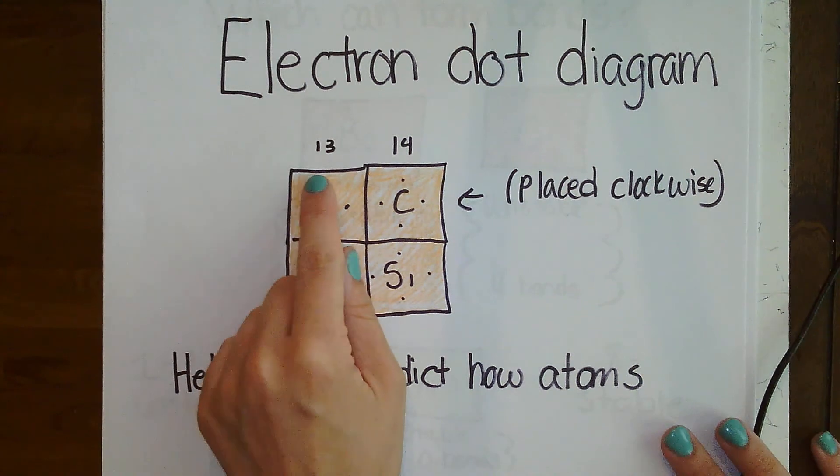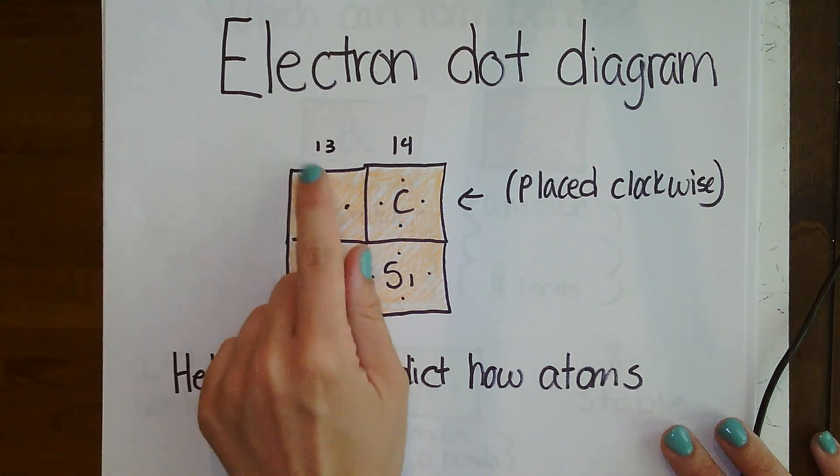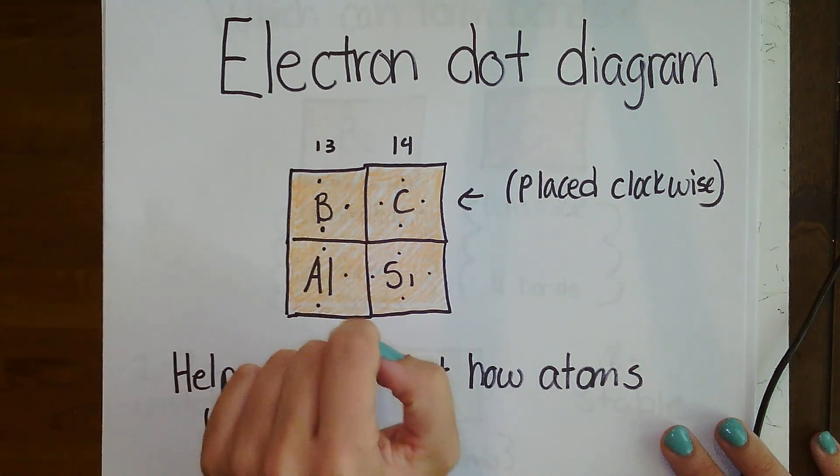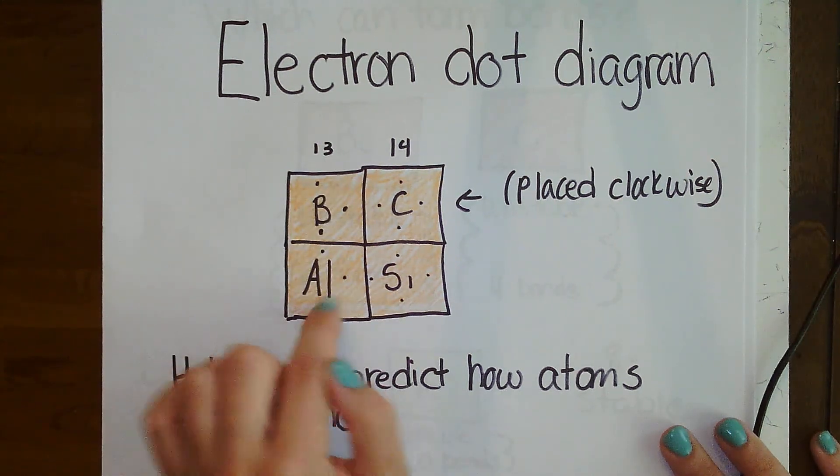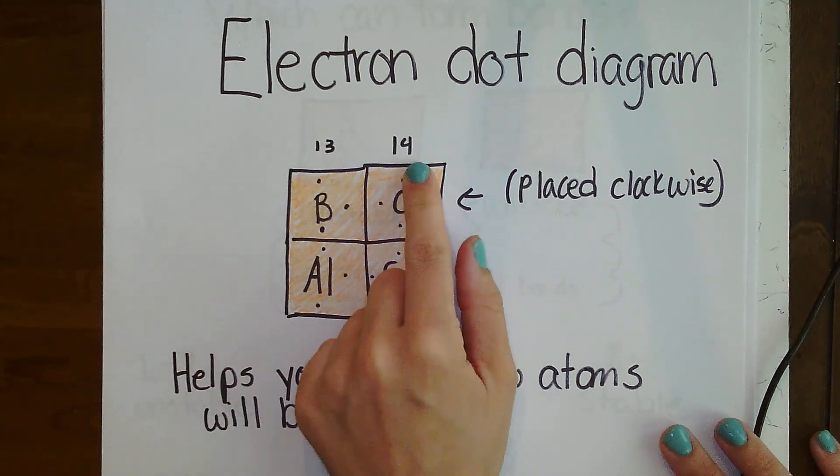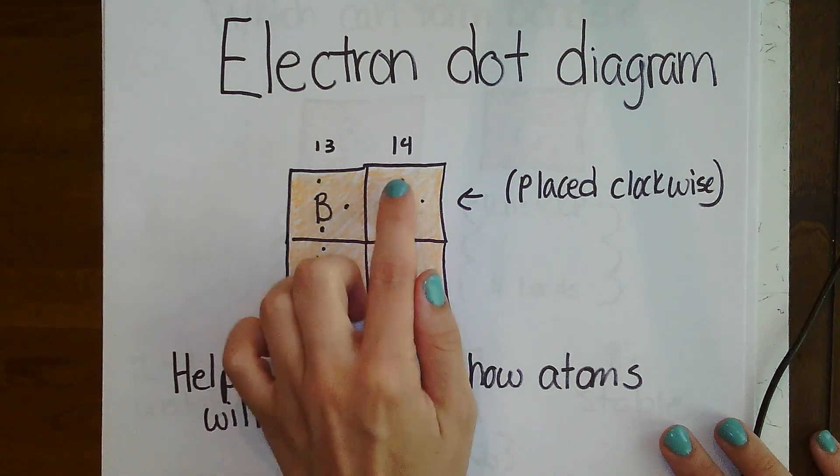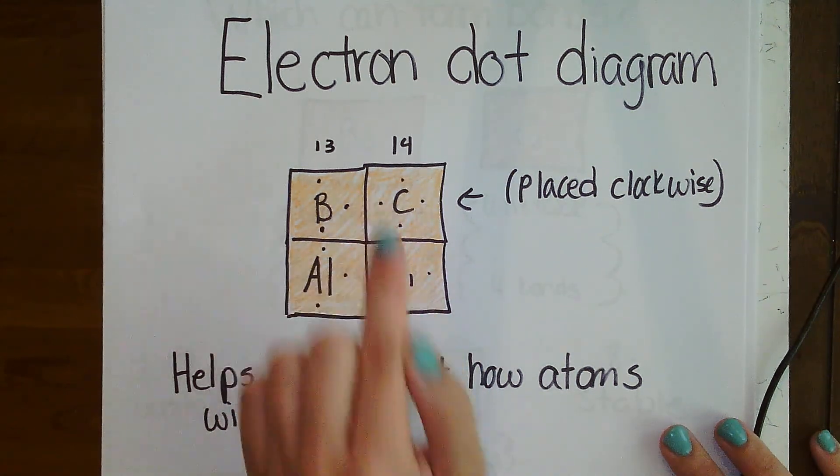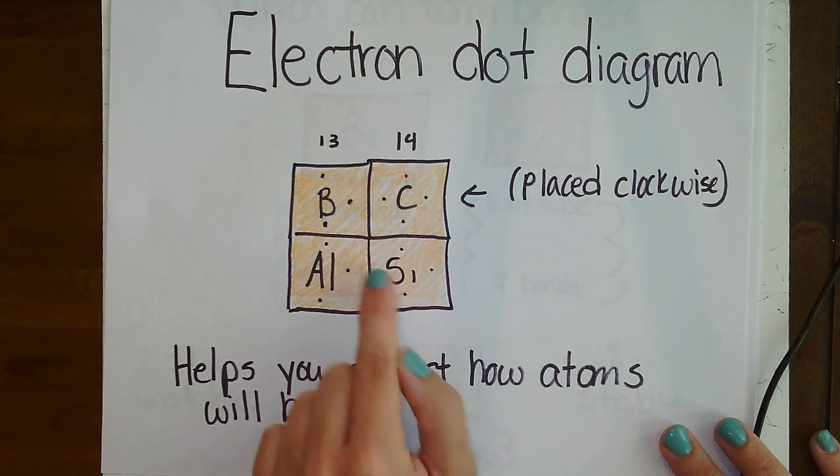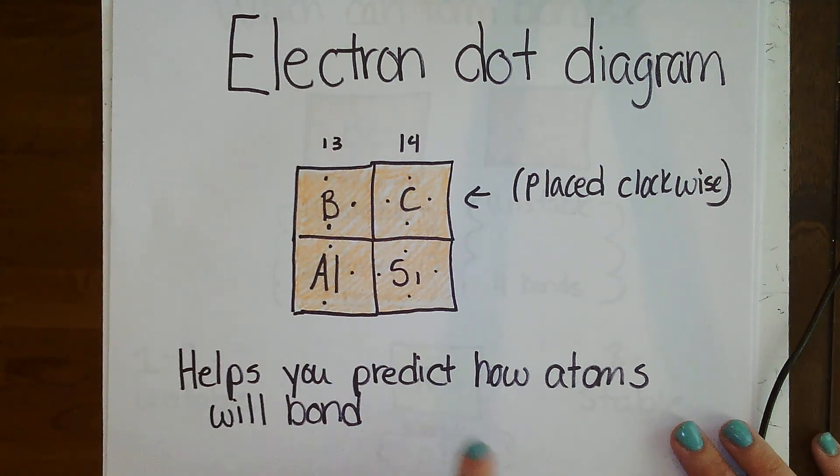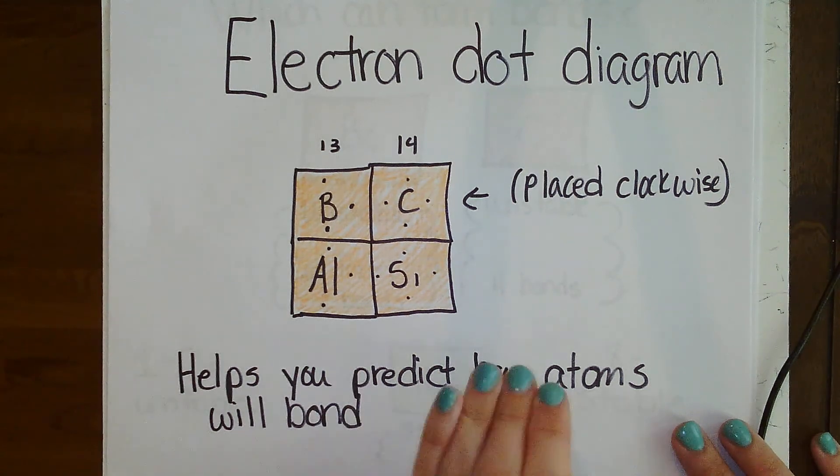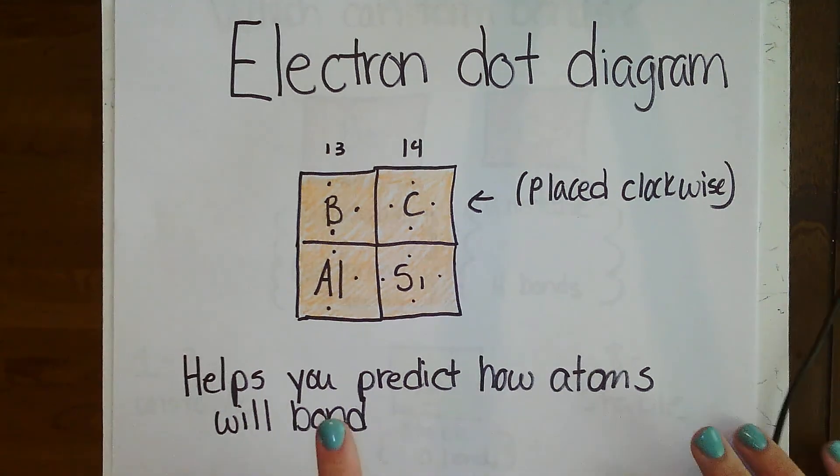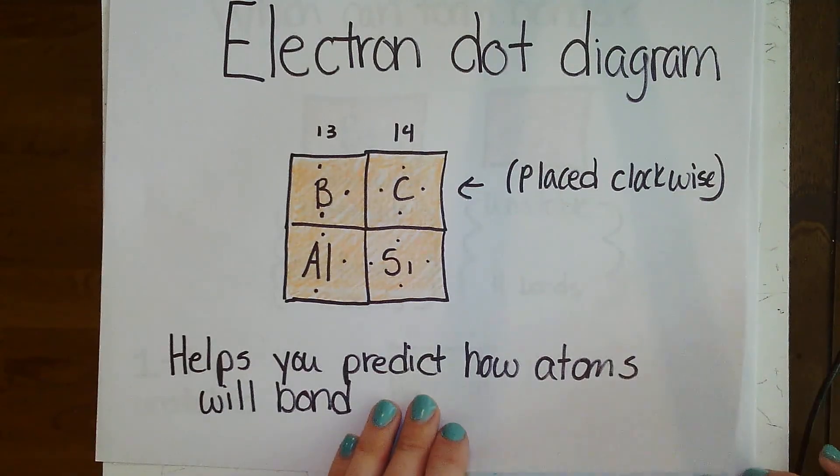If we start off with group 13, we'll start here at the top and place 1, 2, 3. Same with the next one. It's in group 13, so 1, 2, 3. But this element is group 14. That means it has 4 dots: 1, 2, 3, 4. This is how you're going to set up your dot diagram. We'll talk about what we're going to use that for in just a moment. This is how you will predict how atoms will bond with other atoms.